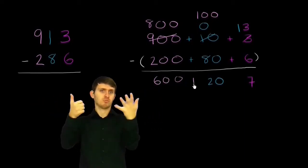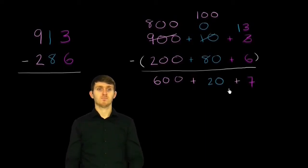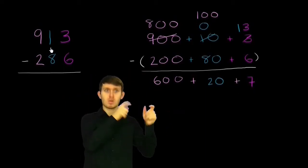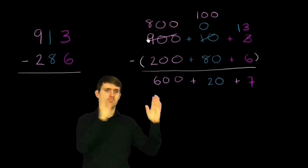So we're left with 600 plus 20 plus 7, which is 627. Now let's do the exact same thing here. But we're not going to expand out the numbers.